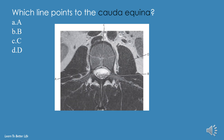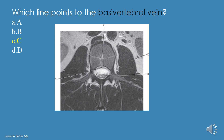Which line points to the cauda equina? A, B, C, or D? The answer is B. Which line points to the basivertebral vein? A, B, C, or D? The answer is C.